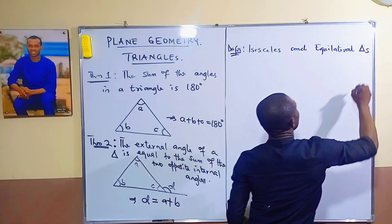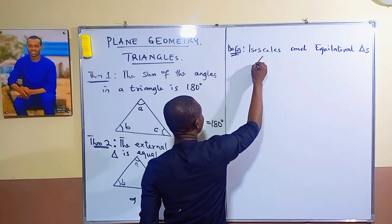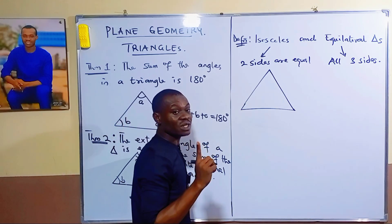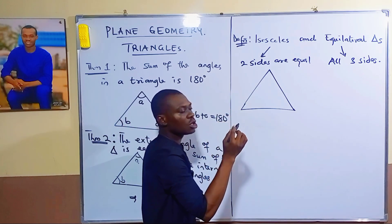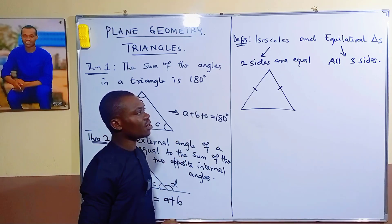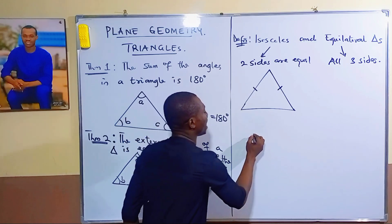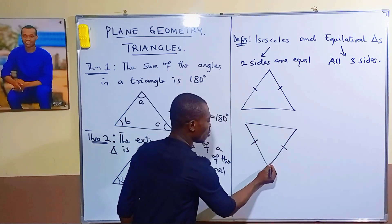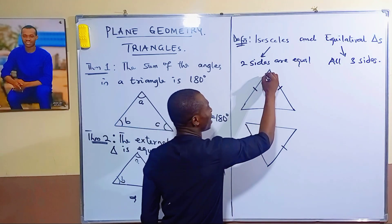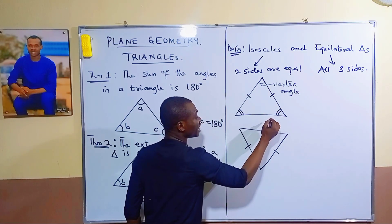Before the third theorem, here is a definition. An isosceles triangle has two equal sides, represented using line strokes on those sides. An equilateral triangle has all three sides equal. The third side of an isosceles triangle is called the base, no matter its orientation. The point where the two equal sides meet is called the vertex, and the angle there is the vertex angle. The two angles at the base are called the base angles.